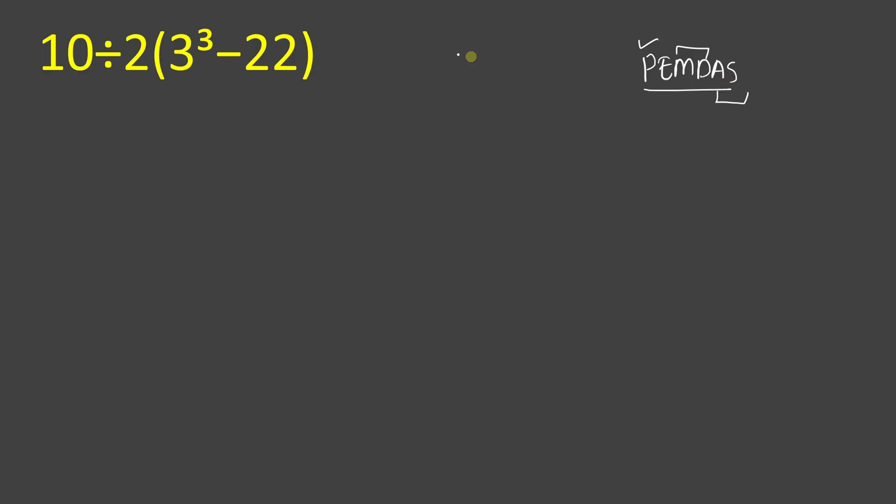As we can see inside that parenthesis there is an exponent part which is 3 cube. This can be written as 3 times 3 times 3. 3 times 3 will give result of 9 times 3, and 9 times 3 will be 27.